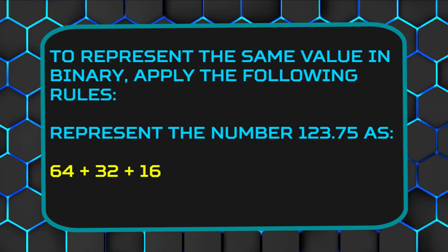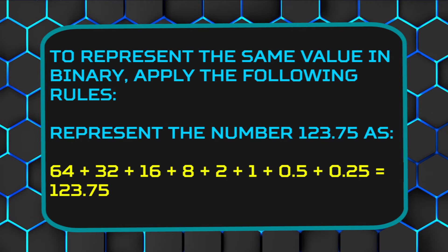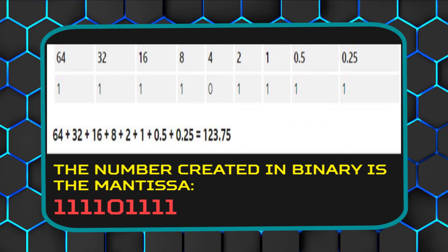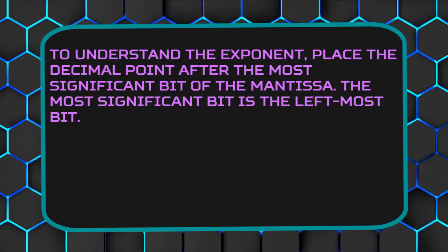So, 64 + 32 + 16 + 8 + 2 + 1 + 0.5 + 0.25 equals 123.75. If you look at the diagram, you'll see how we get this binary, which is 1, 1, 1, 1, 0, 1, 1, 1, 1, 1. To understand the exponent, you place the decimal point after the most significant bit of the mantissa — the most significant bit is the left-most bit.